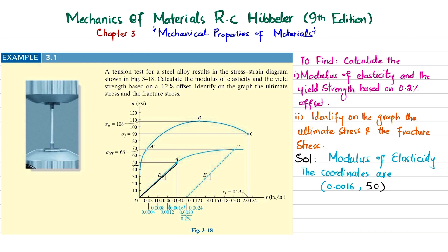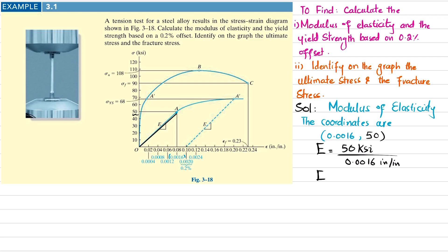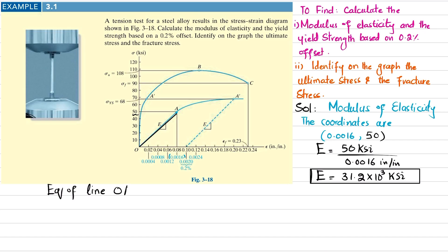The slope of this line equals the modulus of elasticity. The modulus of elasticity equals the y-coordinate, which is 50 ksi, divided by the x-coordinate, which is 0.0016 inch per inch. Calculating this, the modulus of elasticity comes out to be 31.2 × 10³ ksi.